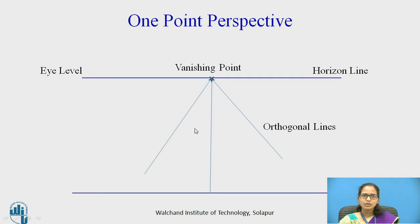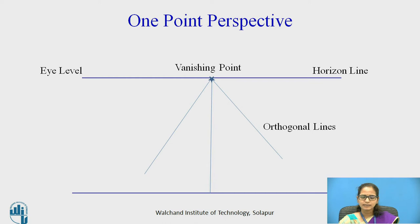This is how the one-point perspective can be represented. One-point perspective can be used to draw images such as doors, roads, and railways. Whereas the two-point perspective can be used to draw the interior of a building.